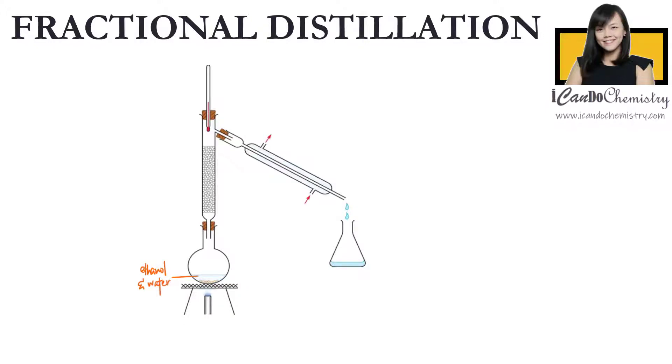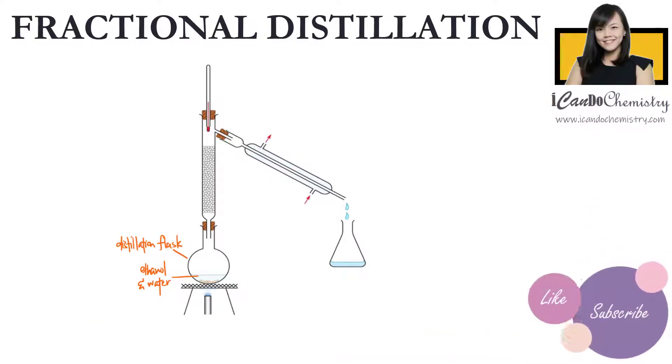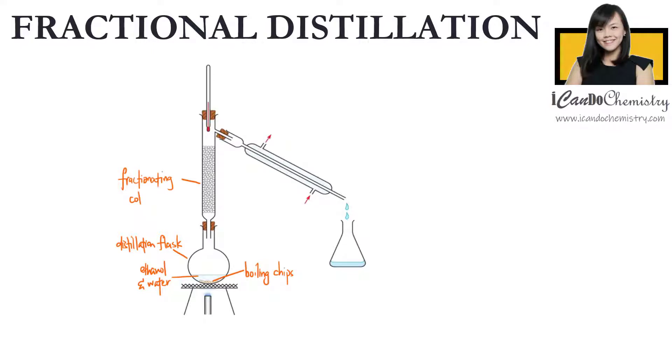We have the distillation flask with water and ethanol inside, and inside we have boiling chips. This long column here is called the fractionating column, and inside there are many glass bits.